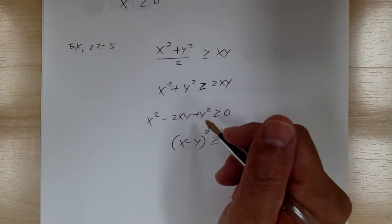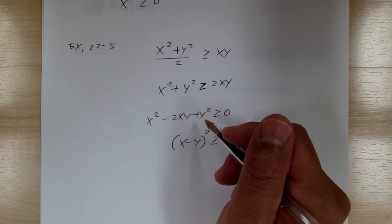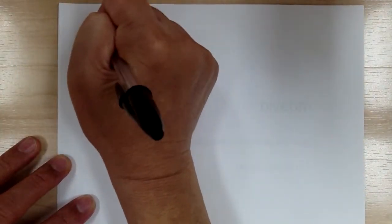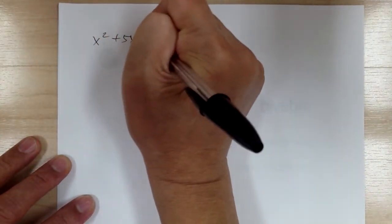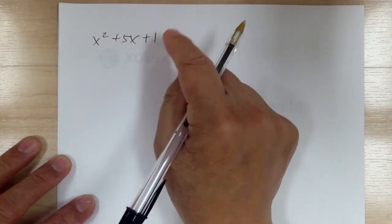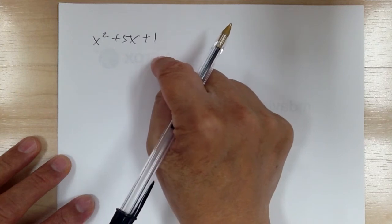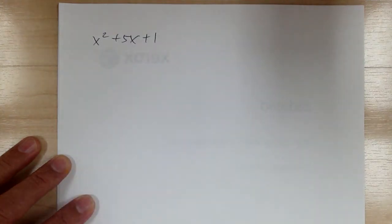Right at the end of this lesson, it says a crucial use of the trivial inequality is finding the minimum of a quadratic expression. For example, if you have x squared plus 5x plus 1, what would be the minimum value of y? The book teaches you to complete the square to find this.